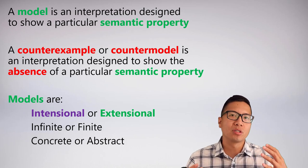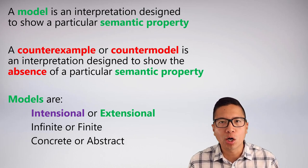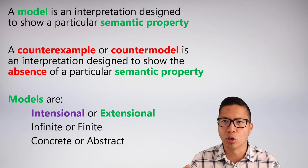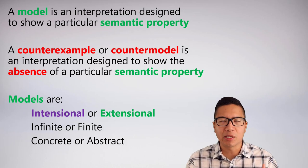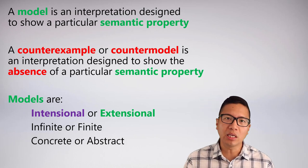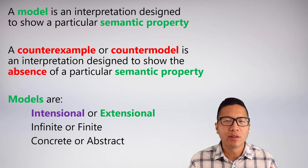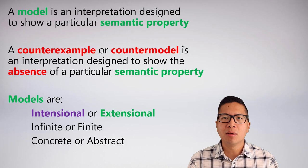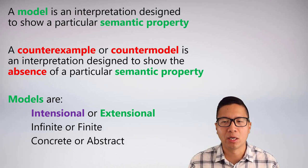Models come with three critical types of choices: Is your model intentional or extensional? Is the universe of discourse infinite or finite? Are the things you're talking about concrete or abstract? Concrete things are objects in the world like rocks or people. Abstract things — circles, squares, e1, e2, e3, numbers — let us show semantic properties without worrying about actual features of the world you may or may not know.